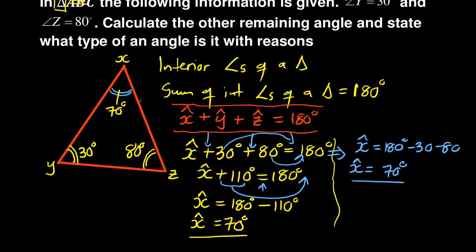So this is how you find one of the interior angles. Now the question says calculate the remaining angle and state what type of angle this is. You know there are three types of angles: acute angle, obtuse angle, and right angle.